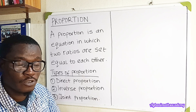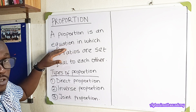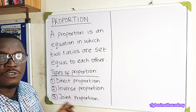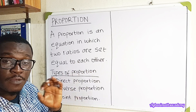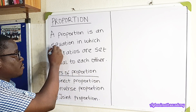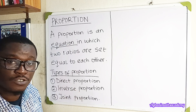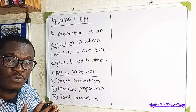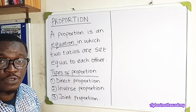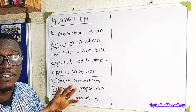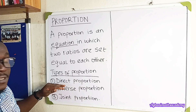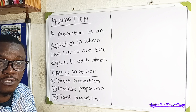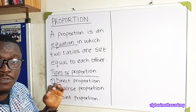The first thing we need to know is: what is proportion? A proportion is an equation in which two ratios are set equal to each other. So a proportion is an equation where we are equating two ratios. There are different types of proportion we'll be looking at: direct proportion, inverse proportion, and joint proportion.